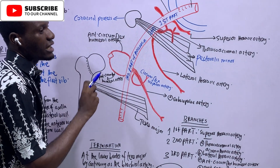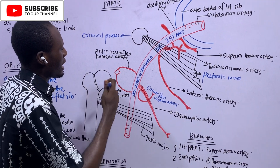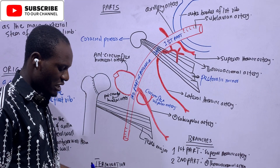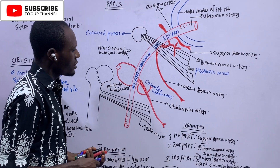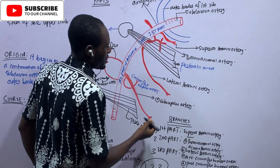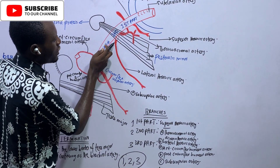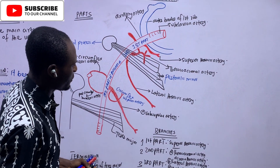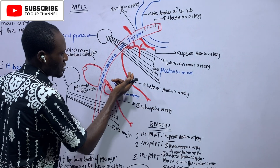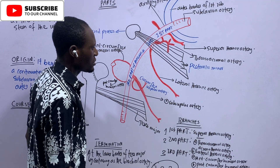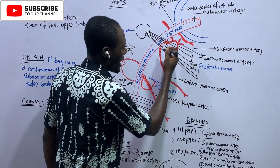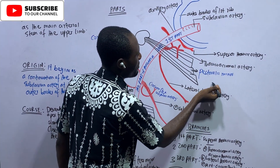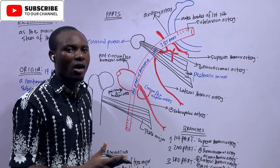The anterior circumflex humeral artery gives an ascending branch, and that ascending branch participates in the anastomosis around the acromion. The lateral thoracic artery runs along the lower border of the pectoralis minor and supplies the pectoralis minor and other structures within the pectoral region. The thoracoacromial artery, also called the acromiothoracic artery, runs along the upper border of the pectoralis minor.